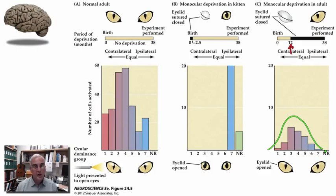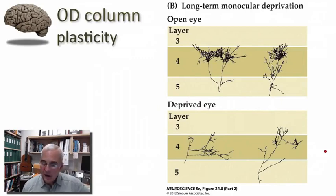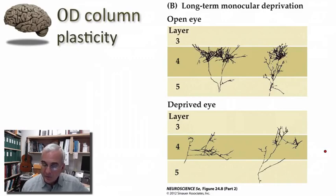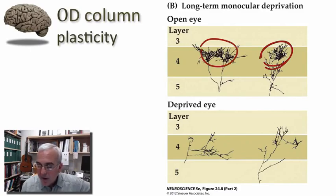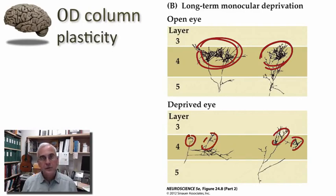Subsequent investigators found that what changes anatomically is a regression of the terminal arborizations of afferents from the lateral geniculate nucleus to the ocular dominance columns representing the deprived eye, and commensurately an exuberant growth of geniculocortical projections driven by the open eye. Rather than a balanced set of ocular dominance columns, the cortical territory of open-eye afferents expands at the expense of closed-eye columns, which are reduced both in number of synaptic connections and in the spatial extent of their terminal arbors.